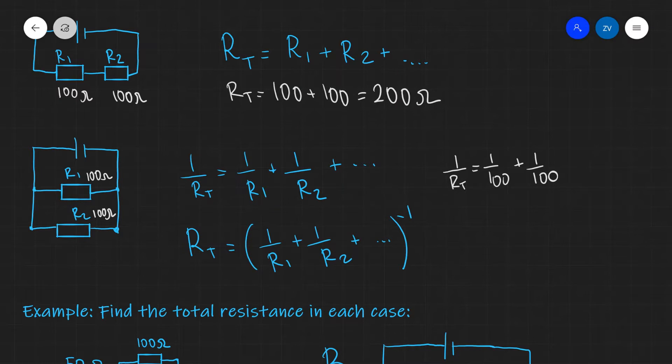This would mean that 1 over R_T will be equal to 2 over 100 and then we can essentially flip the fraction. So R_T will be equal to 2 over 100 raised to the power of minus 1 which is equal to 100 over 2 which is equal to 50 ohms.